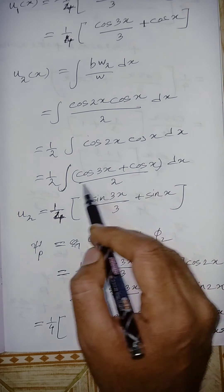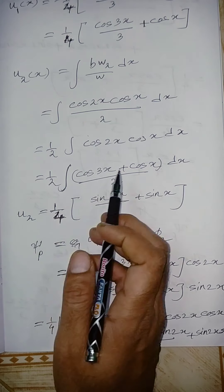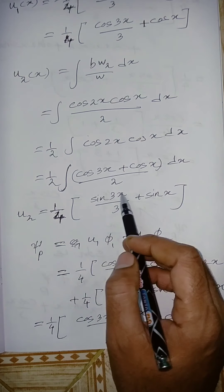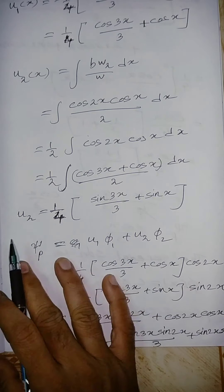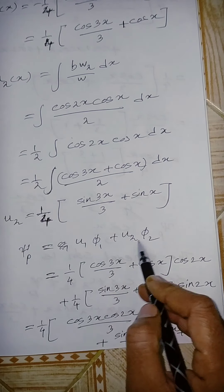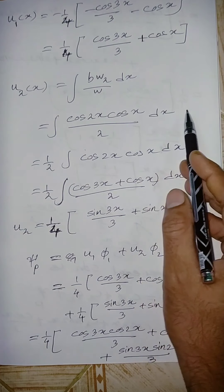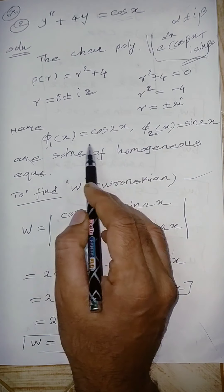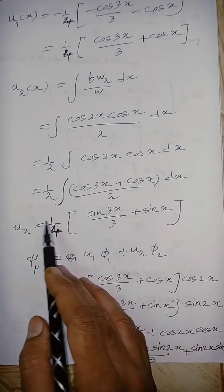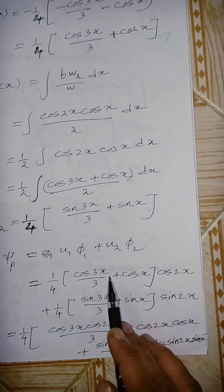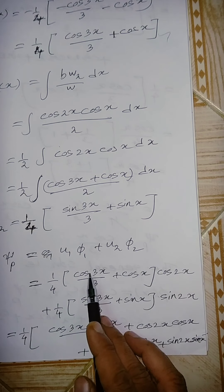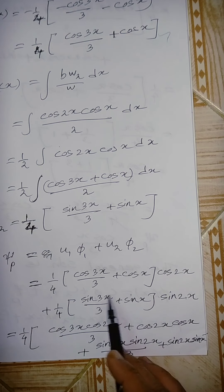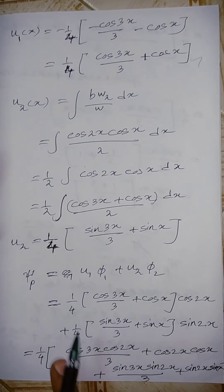To find u₂(x), integrate bW₂/W = cos 2x · cos x / 2. Using cos A cos B = [cos(A+B) + cos(A−B)]/2, we get (1/4)∫(cos 3x + cos x) dx = (1/4)[sin 3x/3 + sin x].